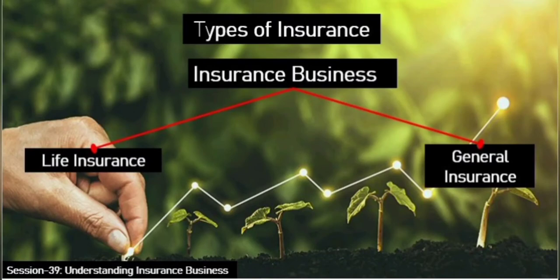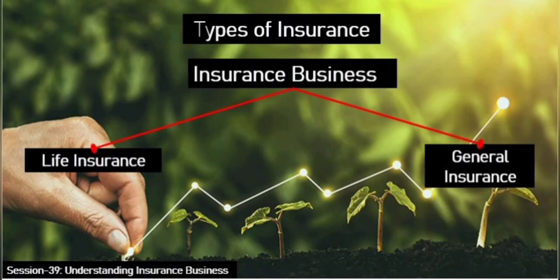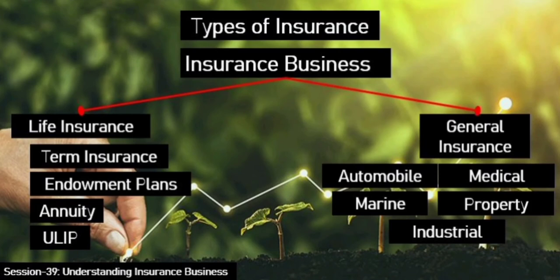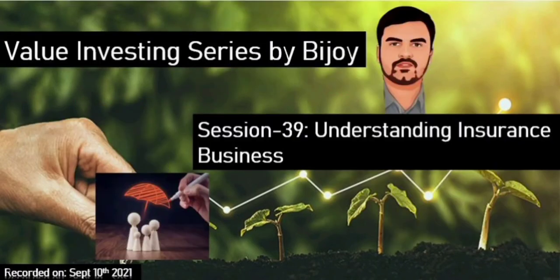There are two main types of insurance: life insurance and general insurance. Life insurance includes traditional term insurance, endowment plans, and unit-linked policies (ULIPs). General insurance includes car, medical, marine, property, industrial insurances, etc. Since our topic is investing and analyzing insurance companies, I will not divert further into all types — this information is easily accessible to you.